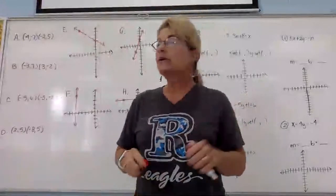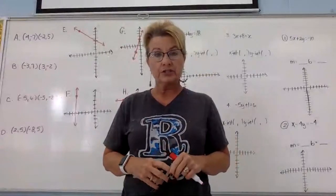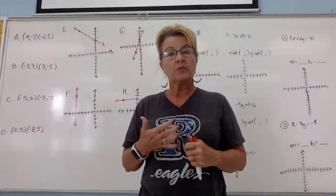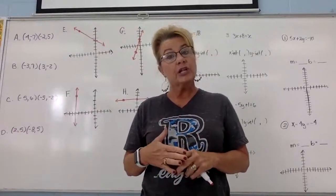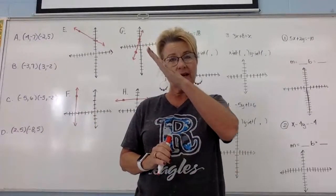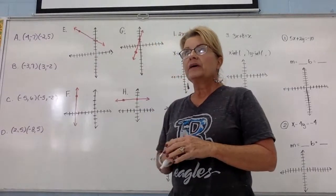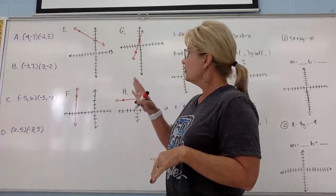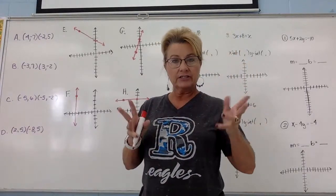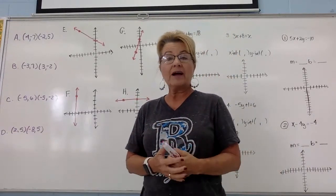Today we are starting 2.3 which is linear functions. You're going to see a lot about lines, and one of the most important things to know about a line is your slope. If you think about slope, we think about a ski slope — it's the direction or the slant of the hill. In your notes you're going to have lines that are tilting and slanting.